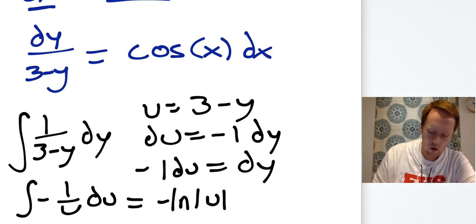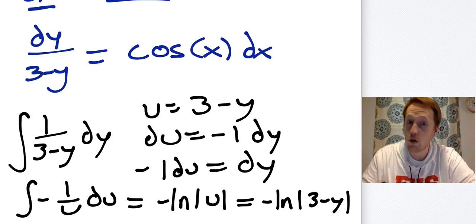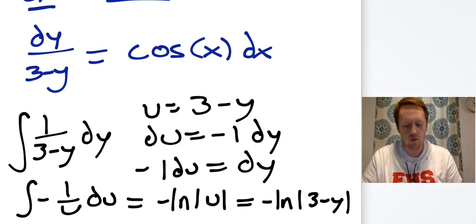Well, so I'm not going to put the plus c because I know I'm going to put it on the other side with the x. So I won't put it there, which is just -ln|3 - y|. So again, we're supposed to put plus c, but I know I'm going to put it on the x side. So I'm not going to put it on this that we just did.